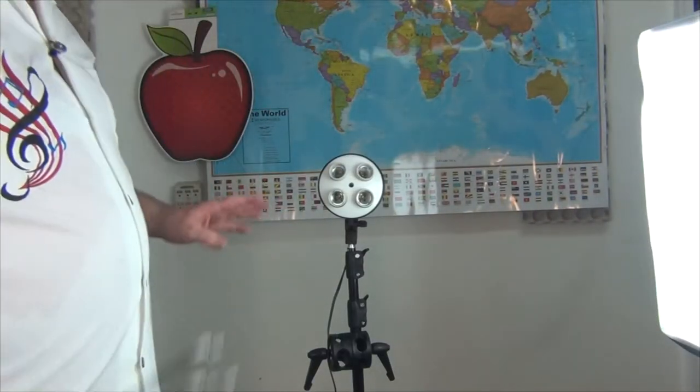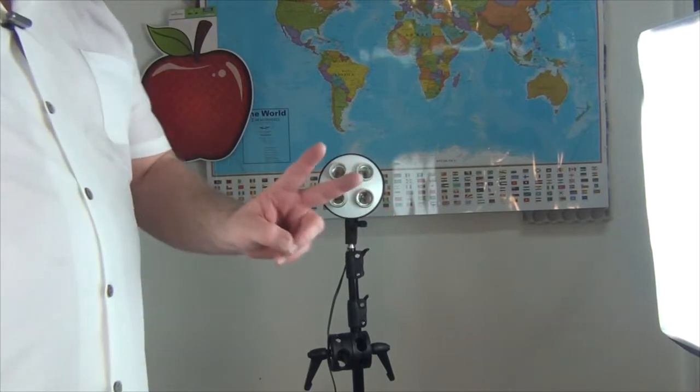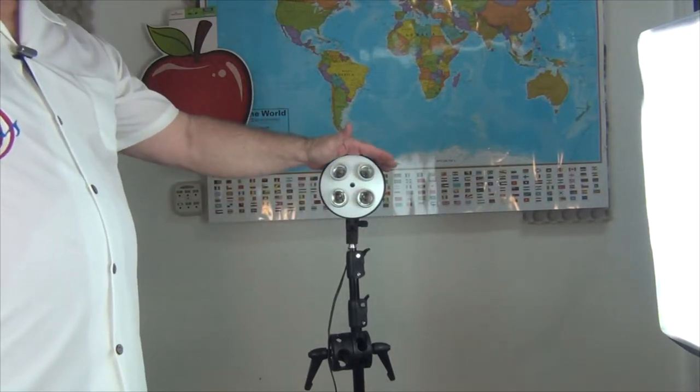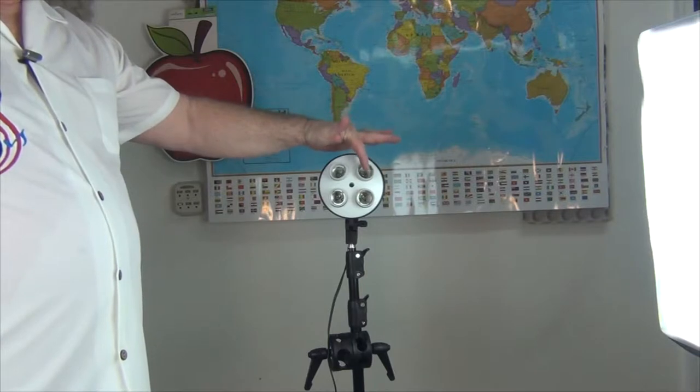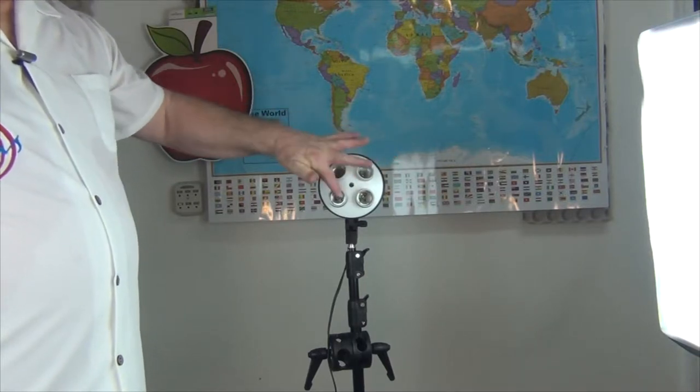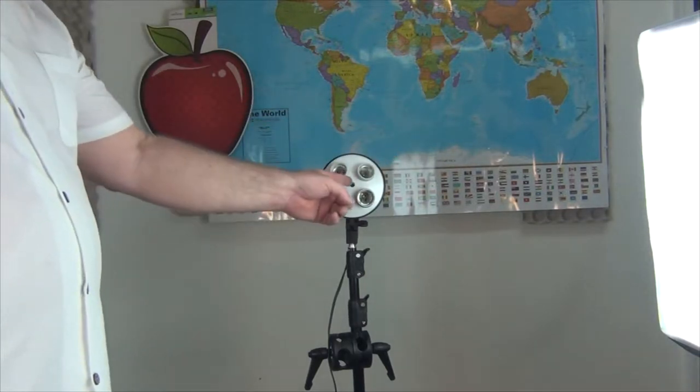Now at the outset, you have to know with this light kit, there are two different size lights. There's a large light and a small light. This is the small light. You can tell it's a small one because it's got four light bulbs. The bigger lights have five light bulbs. And there's another light bulb that goes in the middle.